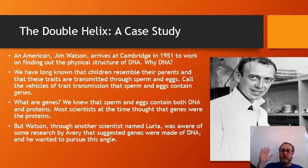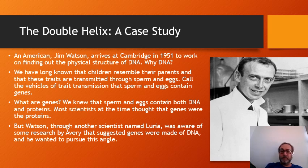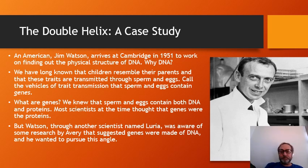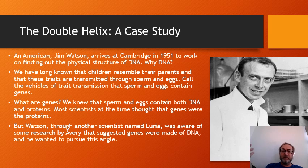The text uses the discovery of the structure of DNA as a double helix as its big framing example. Watson, an American, arrives at Cambridge in 1951 to work on his PhD, trying to figure out the physical structure of DNA. We've known since Gregor Mendel that children resemble their parents and that traits are transmitted through sperm and eggs.